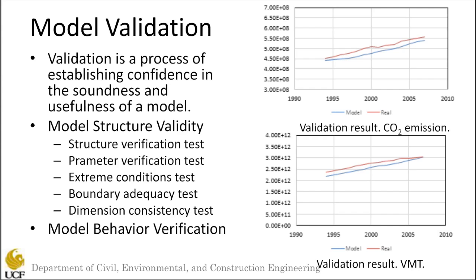For model structure validity, we looked at five different types of tests: structure verification, parameter verification, extreme condition, boundary adequacy, and dimensional consistency. The structure verification test ensures that the parameters in the model and the simulated relationships between them do not contradict any currently available knowledge of the system. For the parameter verification test, both qualitatively and quantitatively, all parameters in the causal loop diagram and the stock and flow diagram are checked against the real world.